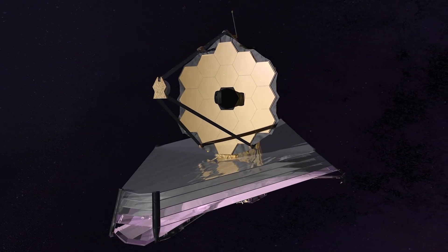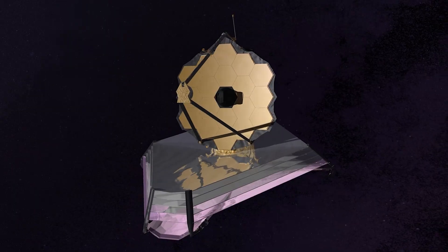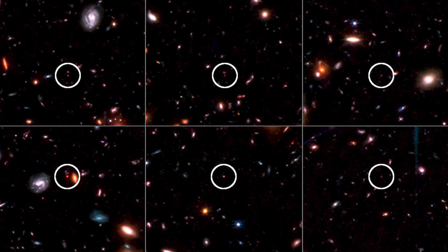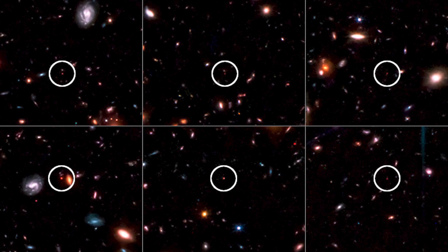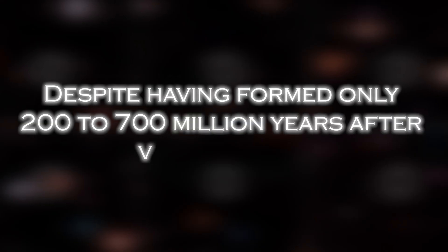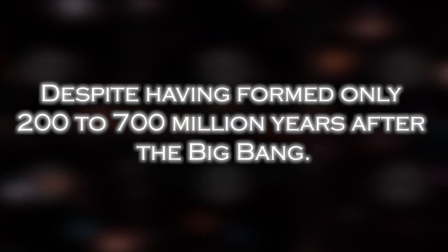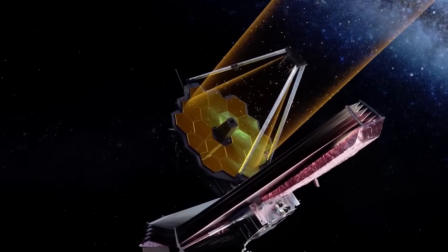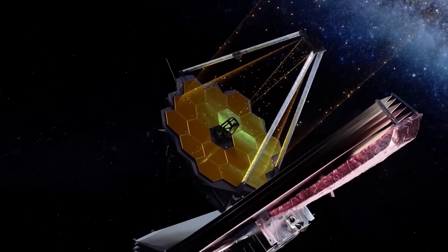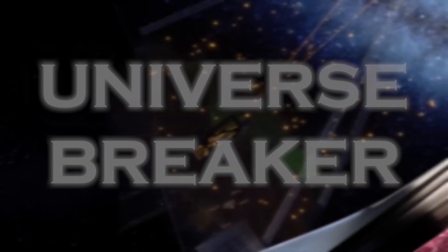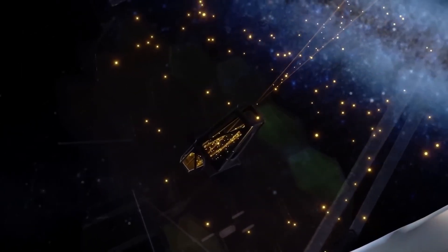The James Webb Space Telescope has revealed the discovery of six massive galaxies dating back to the earliest times of the universe. Each of these galaxies contained more stars than our own Milky Way, despite having formed only 200 to 700 million years after the Big Bang. The team of astronomers who have made the discovery have dubbed these exceptional galaxies universe breakers because, if confirmed, they would revolutionize our entire understanding of the universe.